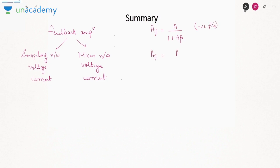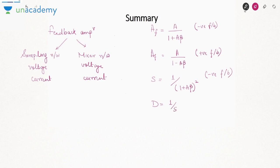For positive feedback the closed-loop gain is A/(1−Aβ). Sensitivity for negative feedback is 1/(1+Aβ), representing fractional change in closed-loop gain relative to fractional change in open-loop gain. Desensitivity is 1/S = 1+Aβ. Negative feedback reduces noise and distortion and increases bandwidth. In the next video, we will cover the four different types of feedback configurations — one for each combination. Thank you.